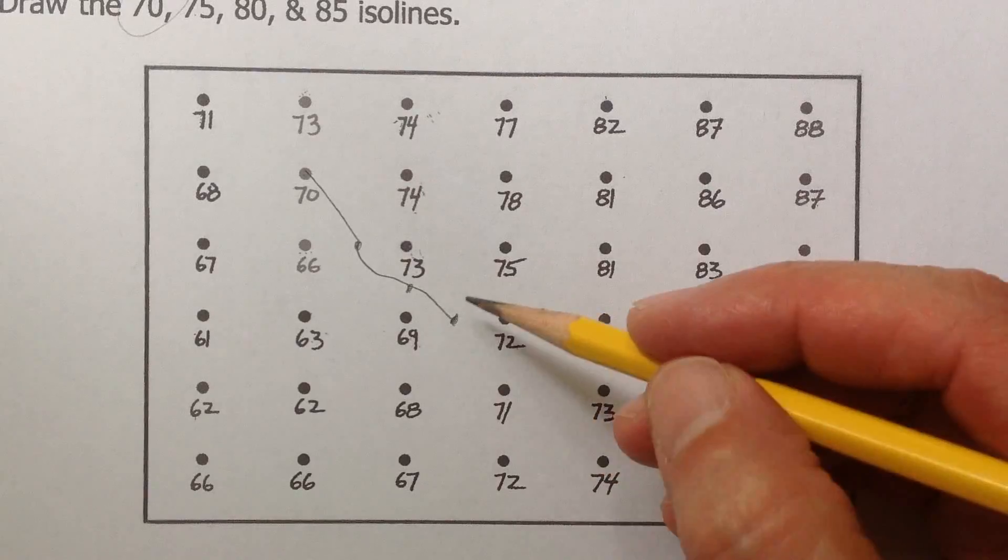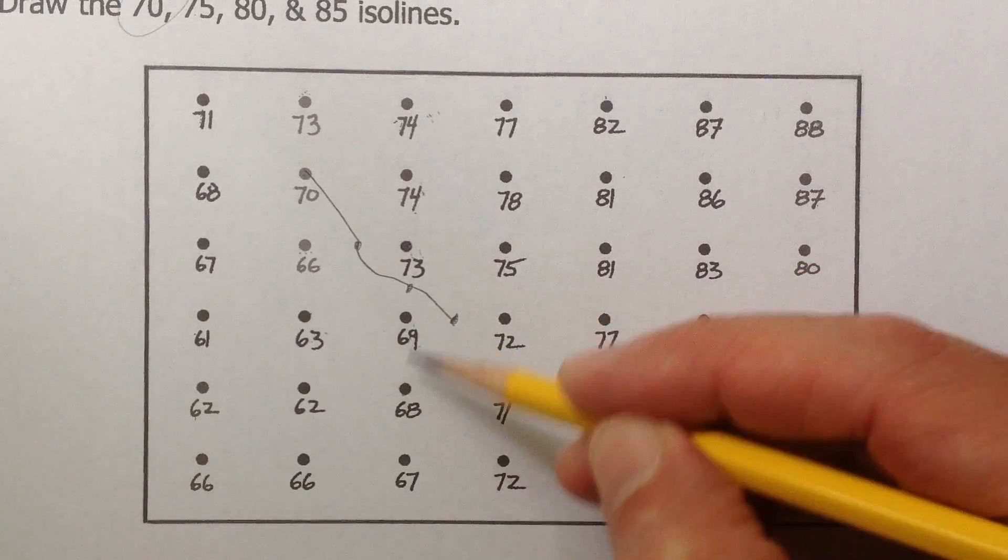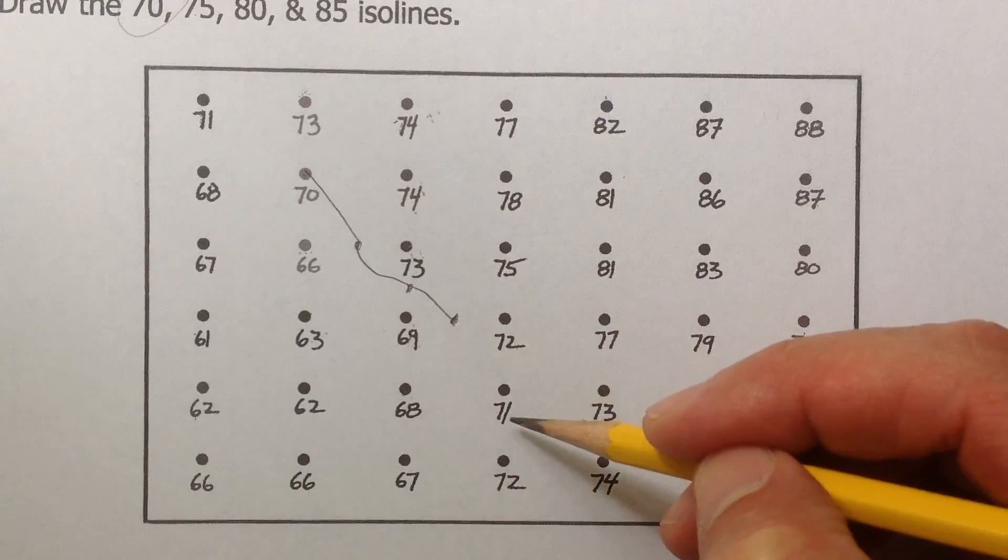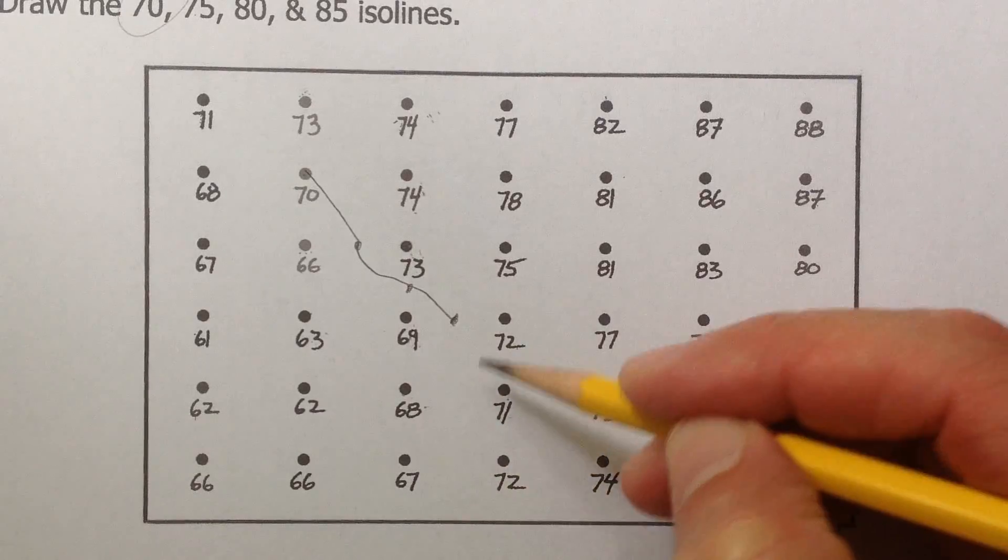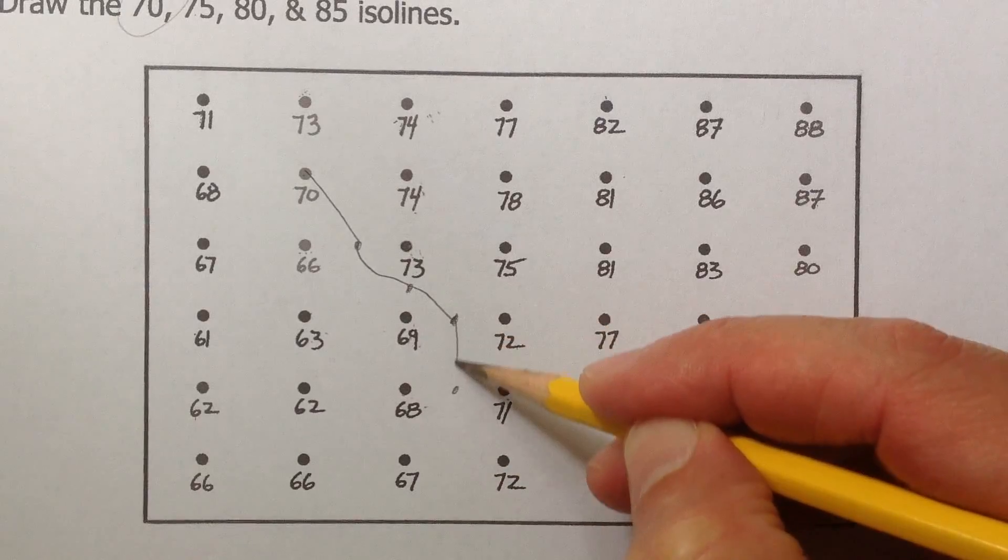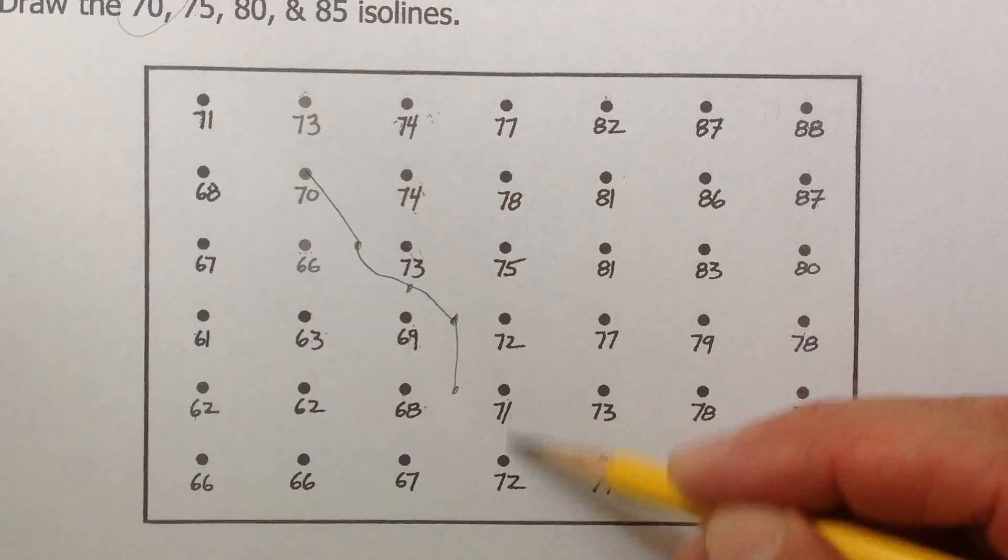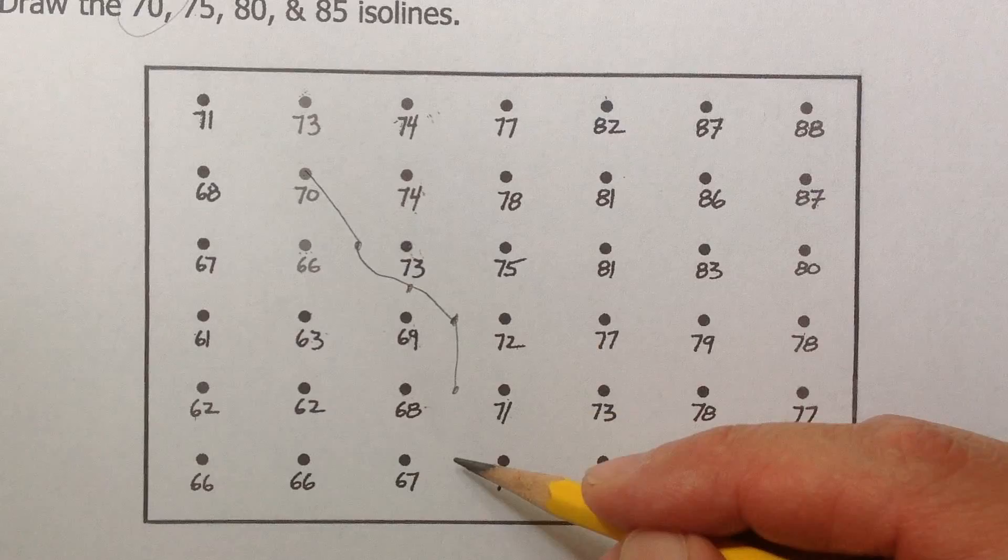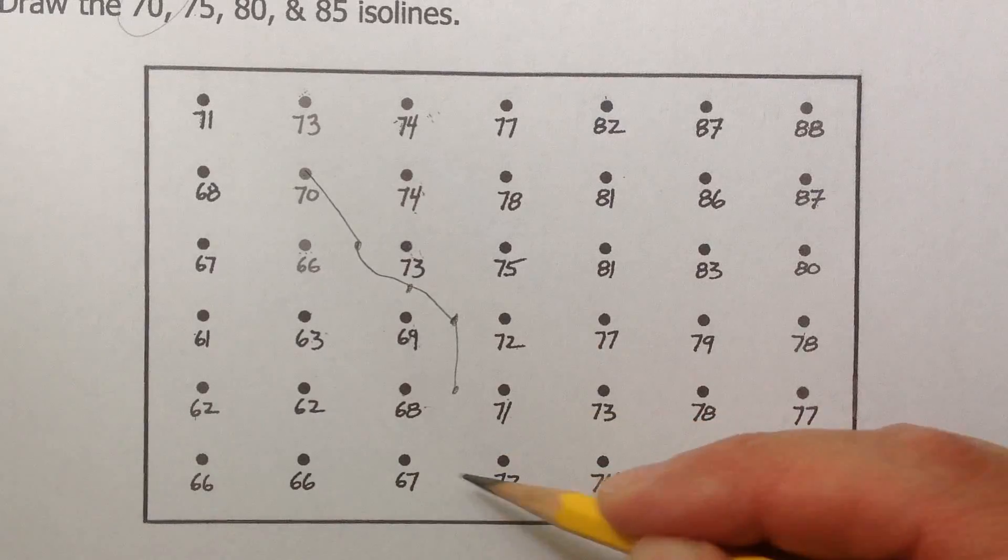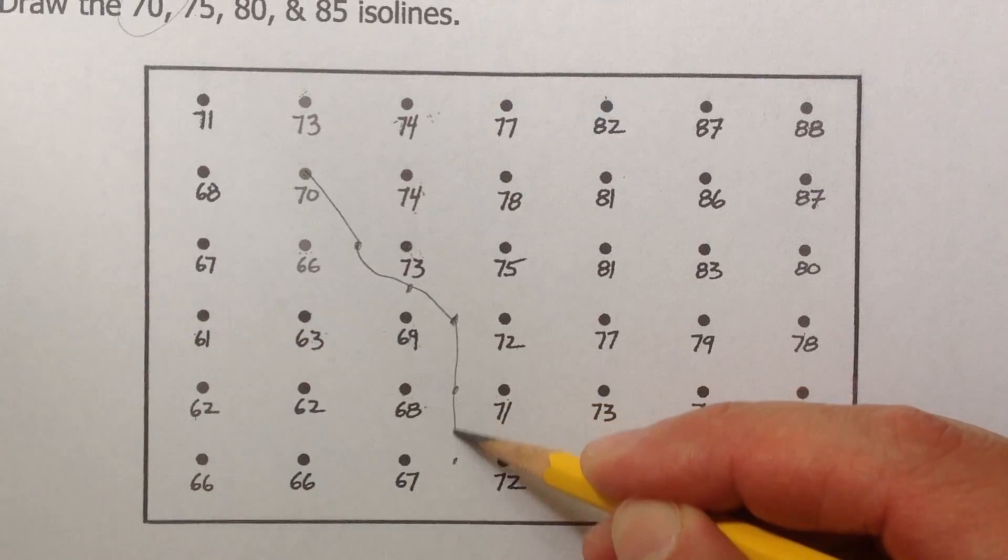So now you're here. Where's the next 70? Is it between 69 and 68? No, it's not. Those are too low. Is 70 between 68 and 71? Yes, it is. Put a dot, connect it. The next 70, is it between 71 and 72? Nope. Is it between 67 and 72? Yes, it is. And then you can go to there.